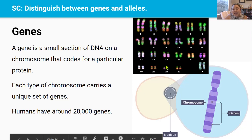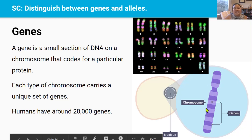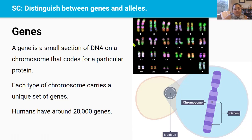The diagram here shows the relationship between the cell, the nucleus, the chromosome, and the genes on the chromosome. Each of the 23 types of chromosomes in humans carry a unique combination or set of genes. So chromosome 1 carries a unique combination of genes not seen in the other chromosomes, and chromosome 2 also carries its unique genes not seen anywhere else.